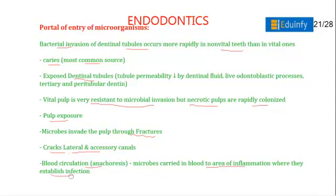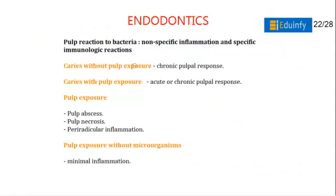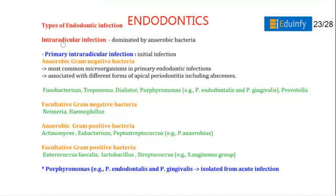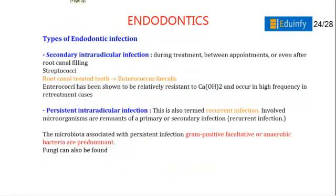Pulp reaction to microbial invasion: caries without pulp exposure produces a chronic pulp response. Caries with pulp exposure can produce acute or chronic pulp response, and may lead to pulp abscess, necrosis, and periradicular inflammation. Pulp exposure without microorganisms results in minimal inflammation. There are types of endodontic infections: intraradicular infections, dominated by anaerobic bacteria, subdivided into primary, secondary, and persistent intraradicular infections.